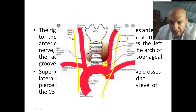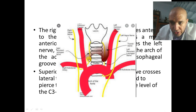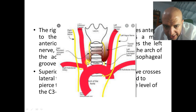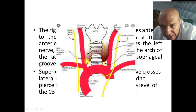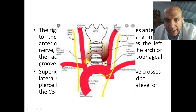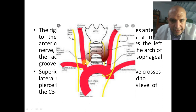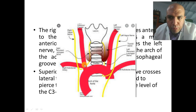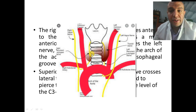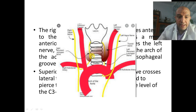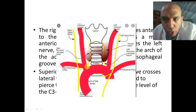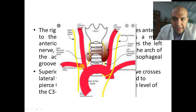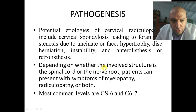On the right side, the recurrent laryngeal nerve passes around the right subclavian artery and takes a more oblique course. So in lower cervical approaches, you can theoretically injure the nerve here because of its more oblique course from the right subclavian artery to its groove. Injury to the recurrent laryngeal nerve causes hoarseness of voice; if bilateral, tracheostomy may be needed.